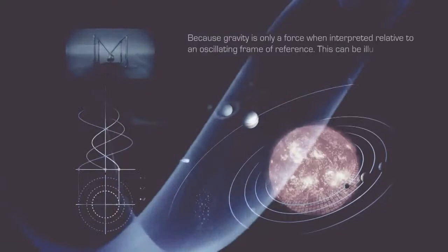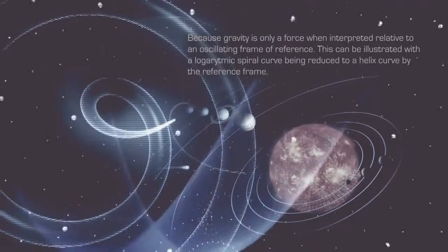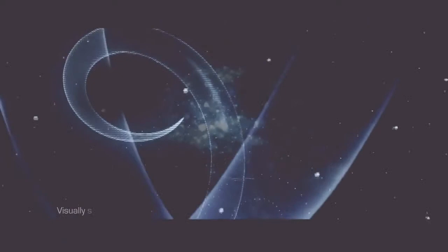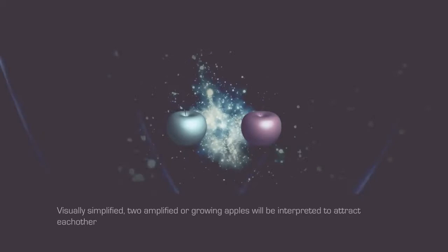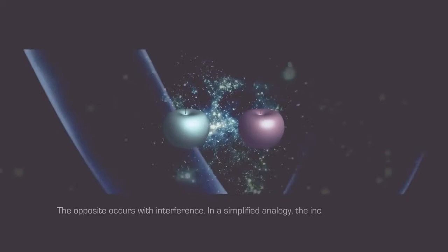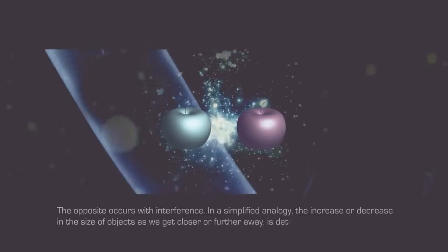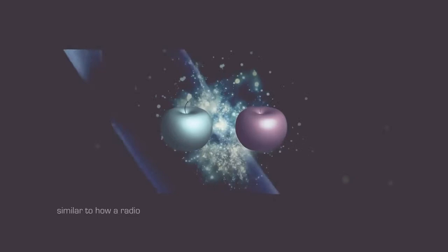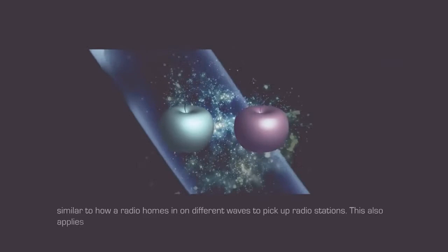This can be illustrated with a logarithmic spiral curve being reduced to a helix curve by the reference frame, making objects spin and move in orbits. Visually simplified, two amplified or growing apples will be interpreted to attract each other when observed by an amplified reference frame, as the size seems unaffected. The opposite occurs with interference. In a simplified analogy, the increase or decrease in the size of objects as we get closer or further away is determined by the shift in vectors of the reference frame, similar to how a radio hones in on different waves to pick up radio stations. This also applies to the influence of gravity.